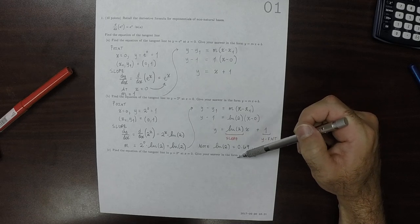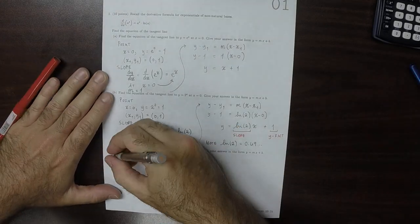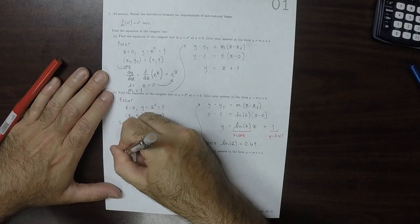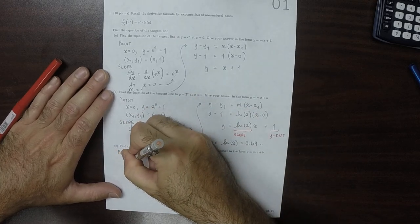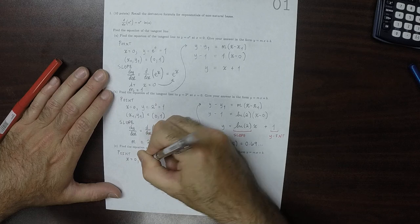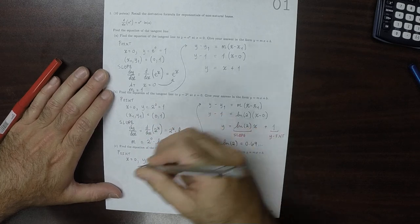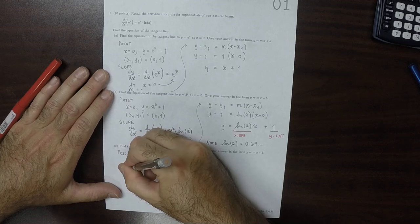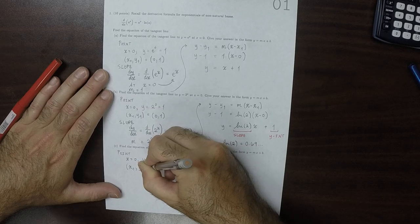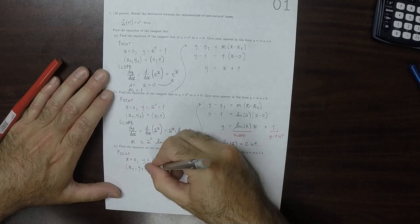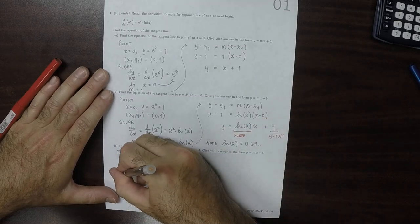And now we're going to show that this one, 3 to x, has slope greater than 1. So again, the point x is 0, and y is what you get when you plug in 0, which is again 1. So the point x1, y1 is 0, 1.